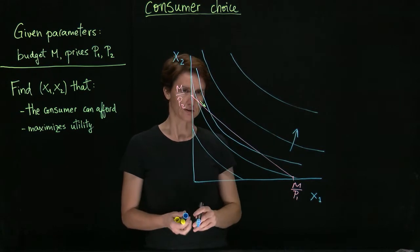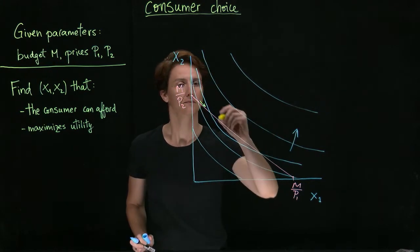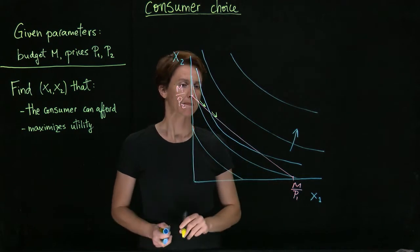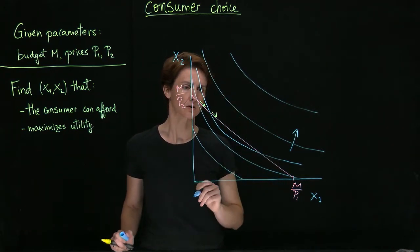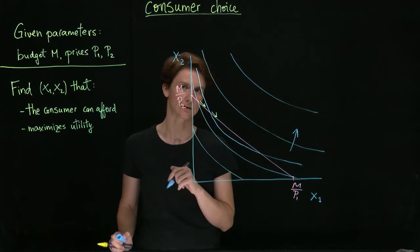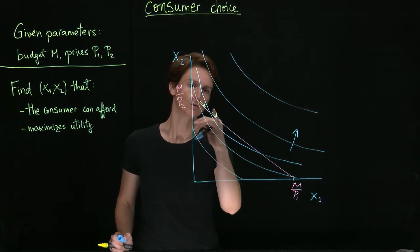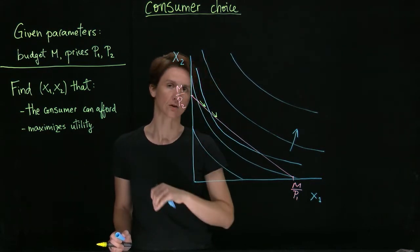We can continue to move in this direction. And as long as the indifference curves we're drawing continue to intersect the budget constraint, we'll be able to continue to improve on our utility level.